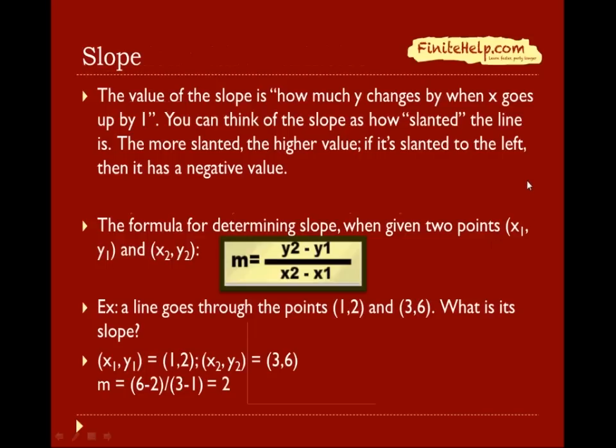The slope value is how much y changes when x goes up by 1. Another way to say it is that's how slanted the slope is. The more slanted it is, the more y changes by when x changes by 1. And if it's slanted to the left, that means when x goes up by 1, y actually goes down. That's why it has a negative value.